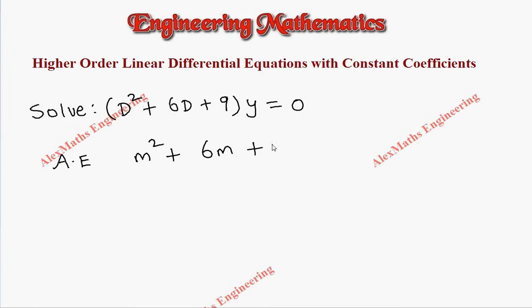The product is 3, sum is 6, so after factorizing we get (m + 3)(m + 3) = 0. We get two values for m, but both are -3, meaning they are equal values.